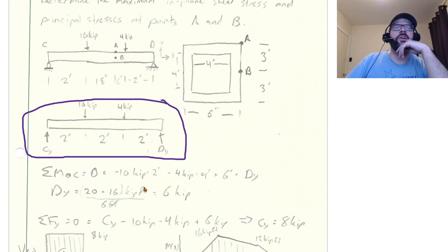And once you know that, you can take the sum of the forces in the y direction to find what your cy is. So sum of the forces in the y direction is equal to zero, is equal to cy, minus 10, minus four, plus six, minus cy is equal to eight.